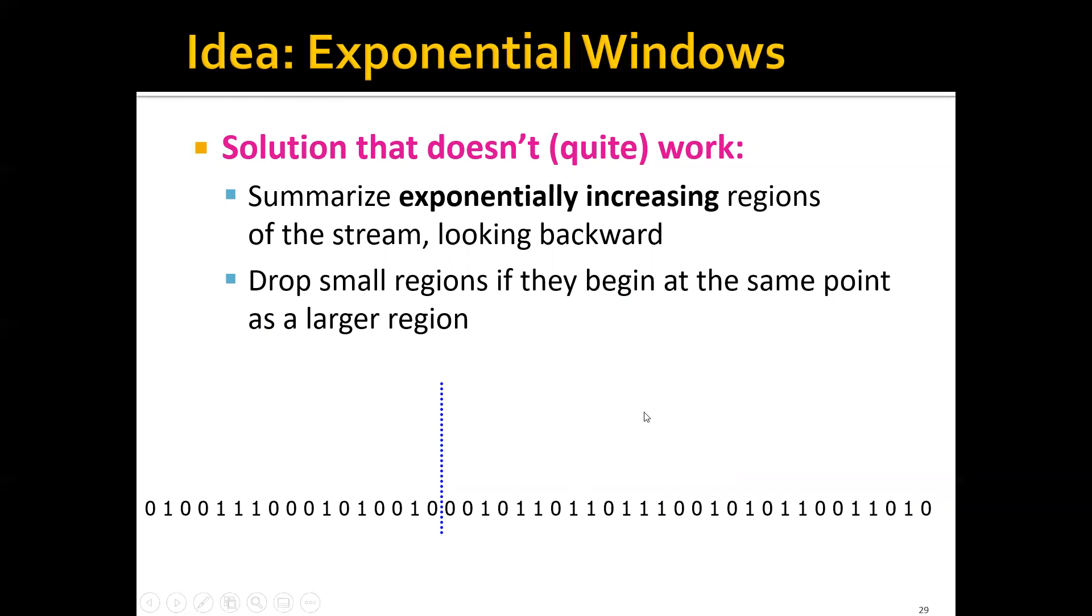For example, let's say that we have this whole stream of data and we only care about the most recent N bits. We can just summarize this data using exponentially increasing size of windows. For example, this 10 simply means that in this region here, we have a total number of 10 ones.